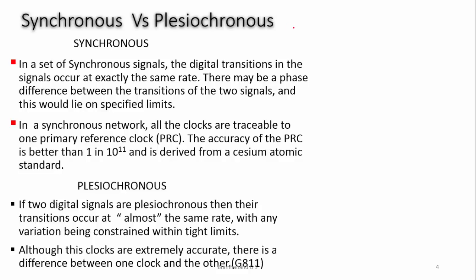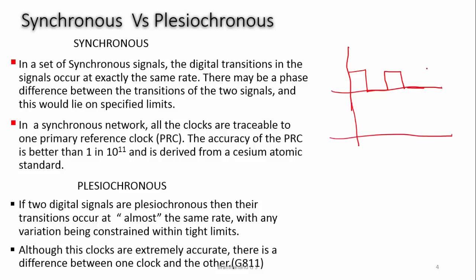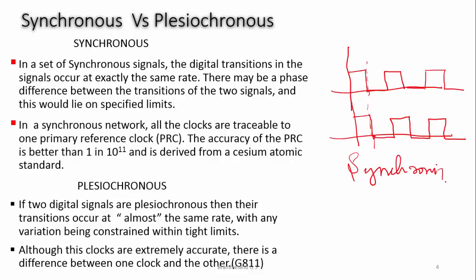What is the difference between synchronous and plesiochronous? In synchronous signals, the digital transitions occur at exactly the same rate. There may be a phase difference between the transitions of two signals, within specified limits. In SDH, the phase difference between signals occurs almost the same — that is why it is called synchronization.